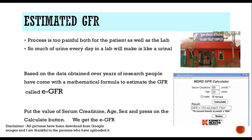You can understand that if we do a clearance study, it involves collection of 24 hours of urine, and if we have to do so many tests a day, the laboratory workload becomes very high. So based on data obtained over years of research, people have come out with a mathematical formula to estimate the glomerular filtration rate. This is called the eGFR — estimated glomerular filtration rate. There is a complex formula, but if we put the values of serum creatinine, age, and sex of the patient and then press the calculate button, we get the eGFR.